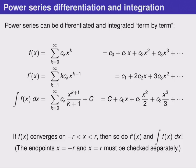The especially amazing thing about this is that if our original series f of x converges from negative R to R, then so do its derivative and anti-derivative series. The endpoints at negative R and R should be checked separately because they might change. What this really says is that if you have a power series, then its derivative and anti-derivative series have the same interval of convergence except possibly at the endpoints.